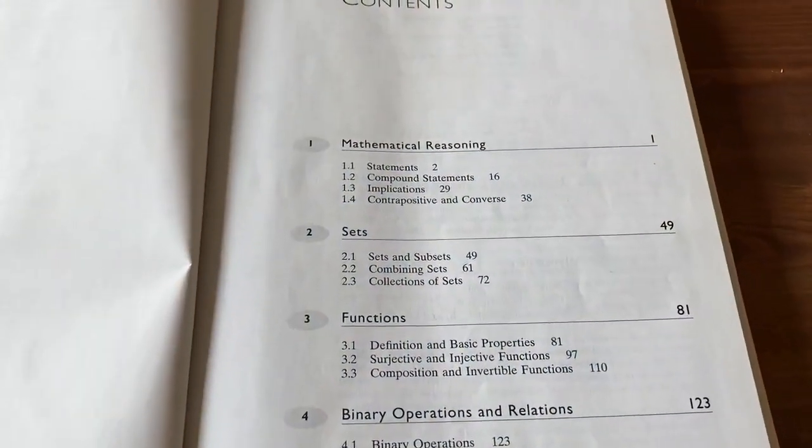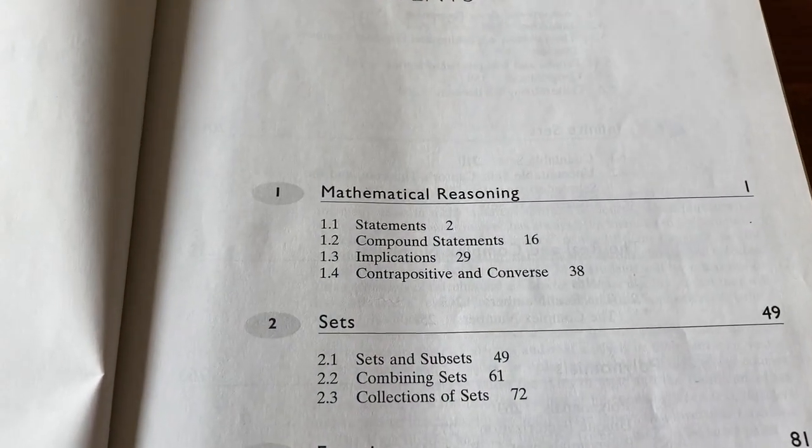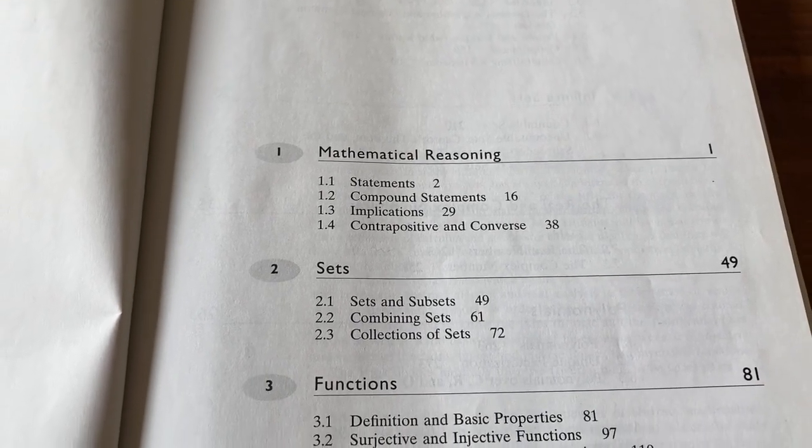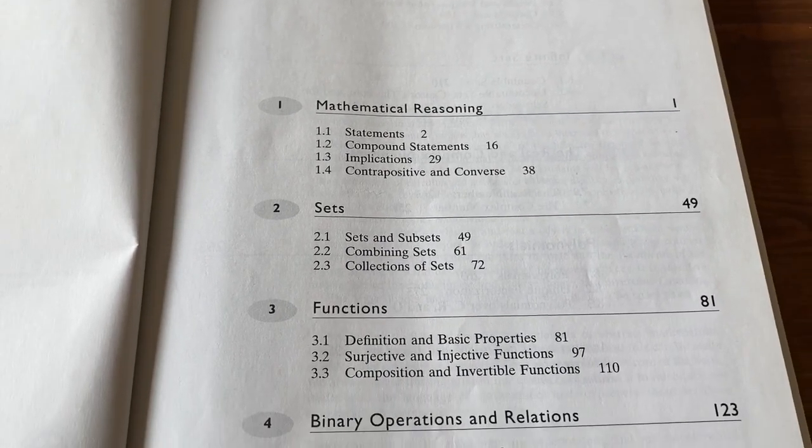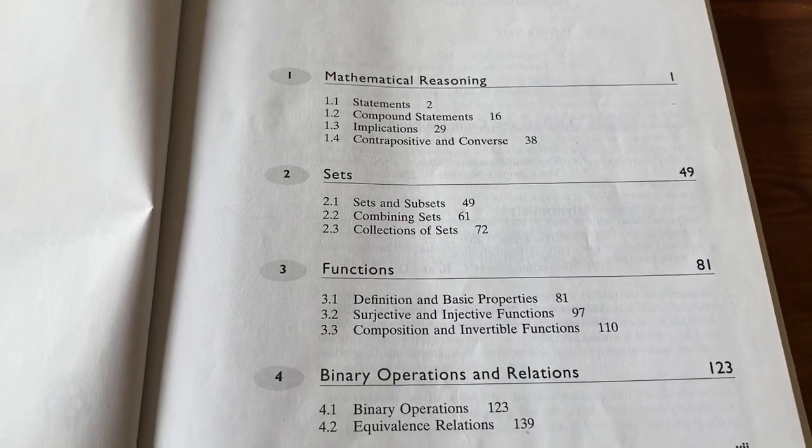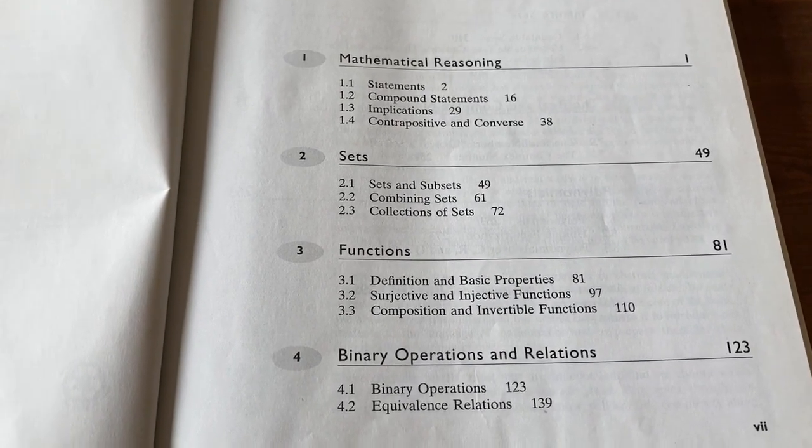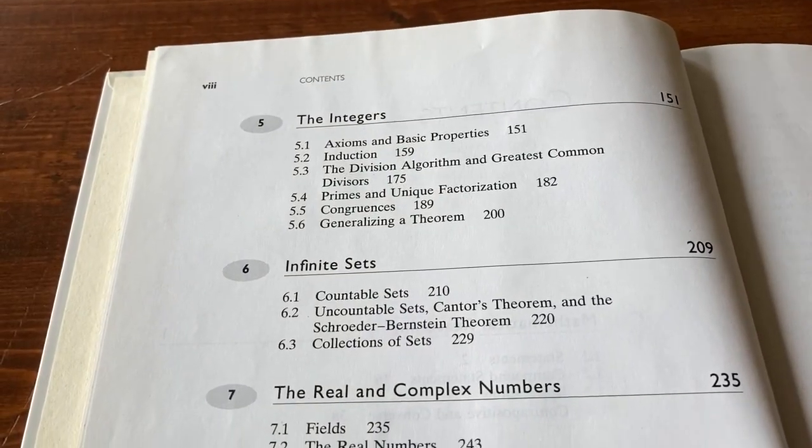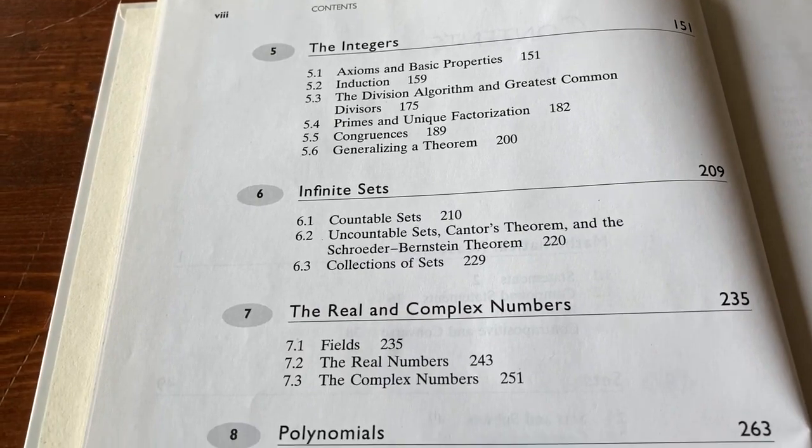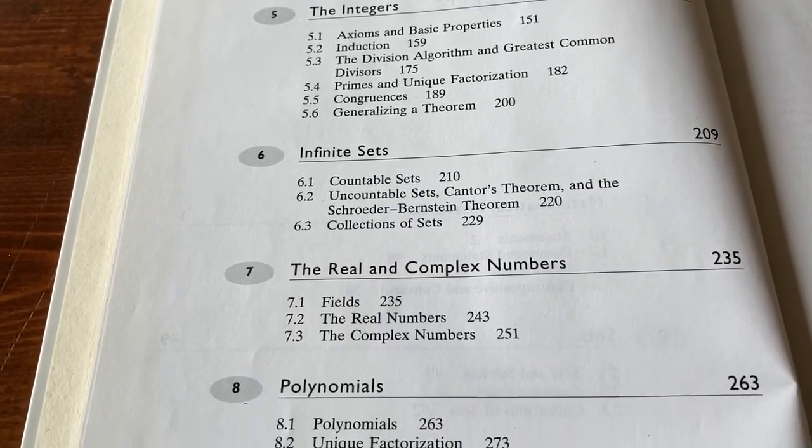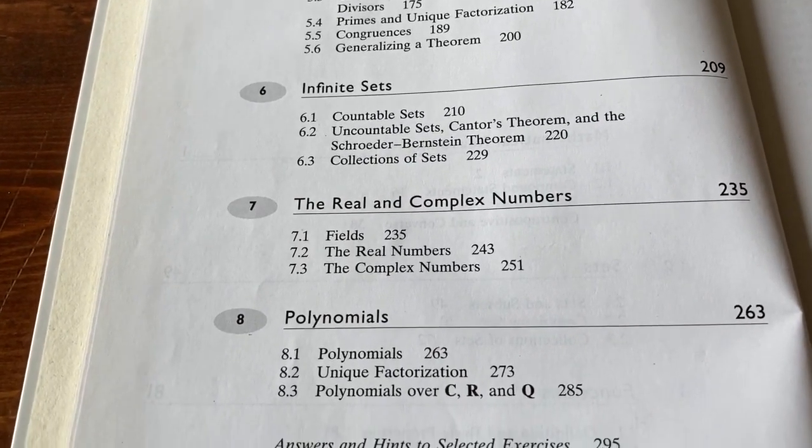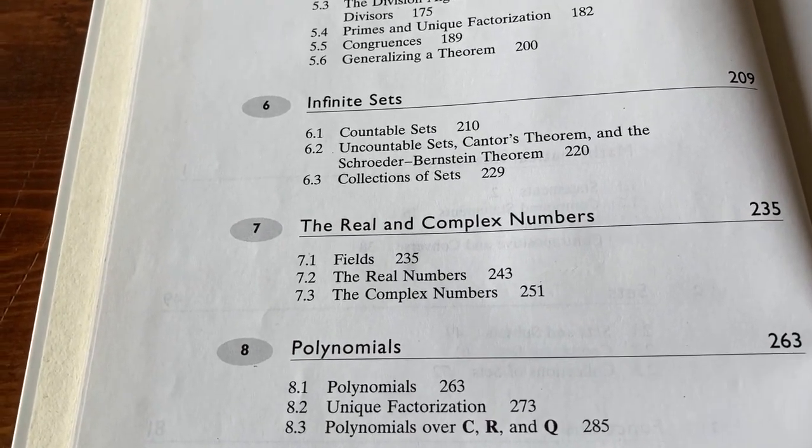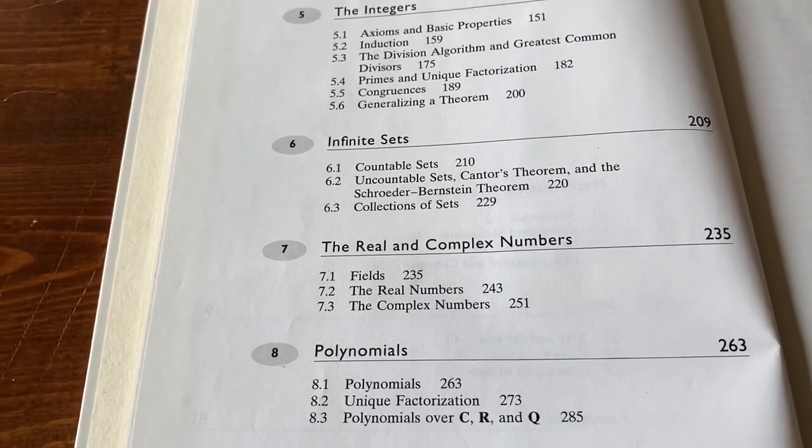Let's take a brief look at the table of contents. So it starts with mathematical reasoning, then it goes on to sets, and then functions, and then binary operations and relations. It then goes on to discuss the integers, infinite sets, some stuff with real and complex numbers, and it actually talks about polynomials, which is kind of interesting. That's not a very common topic in a proof writing book.